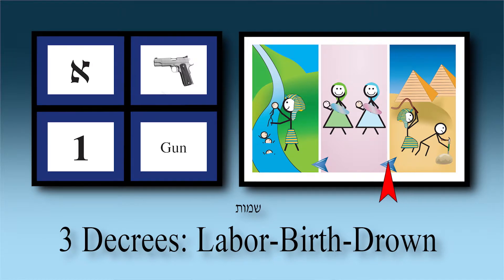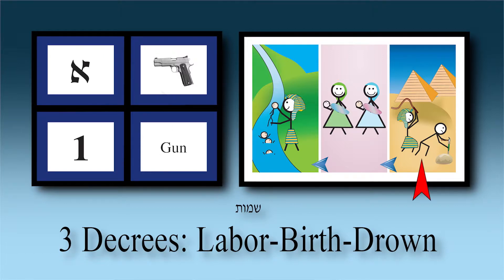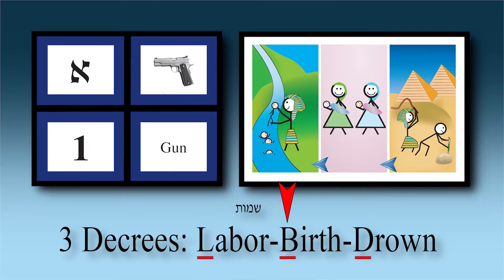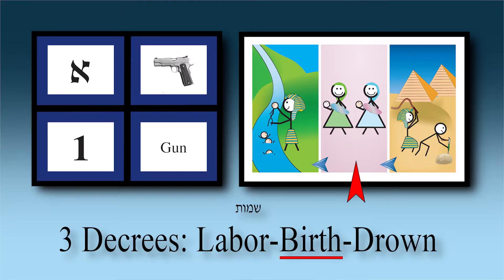Starting with Perek Aleph: in your picture you'll see three parts representing the three decrees in Perek Aleph of Shemot. Decree number one was labor — we'll use the letter L. The second decree: birth of every boy — BBB, birth boy — every single one had to be killed. The third decree was drown — D. So L-B-D: Labor, Birth, Drown. First came hard labor; when that didn't stop the Jewish population growth, the next decree was to kill every boy at birth, and then drown.